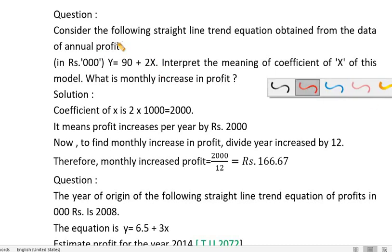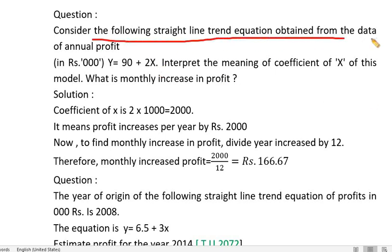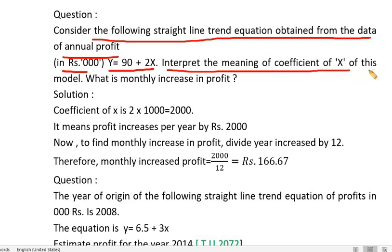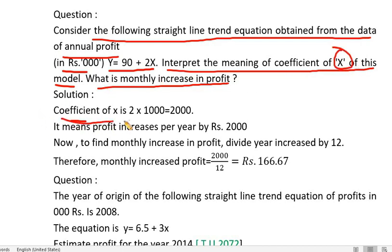Consider the following straight-line trend equation obtained from the data of NRL: y equals 90 plus 2x. Interpret the meaning of the coefficient of x in this model. The coefficient of x is 2, meaning profit increases by 2 (in thousands) per year.